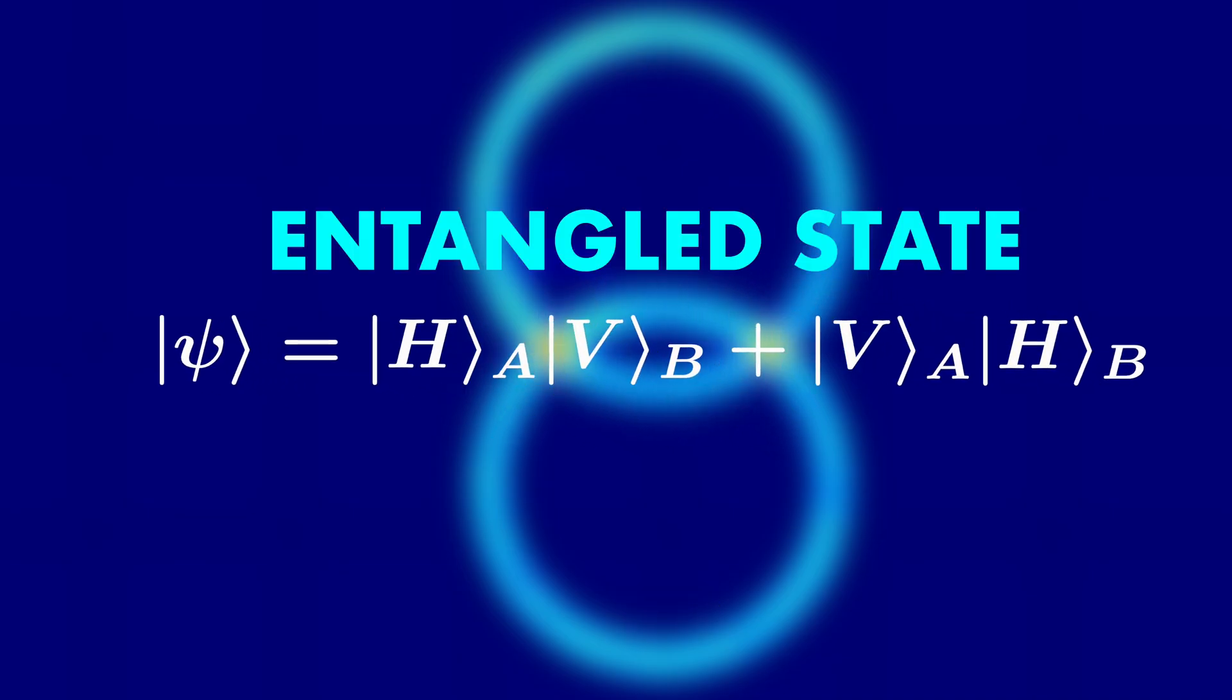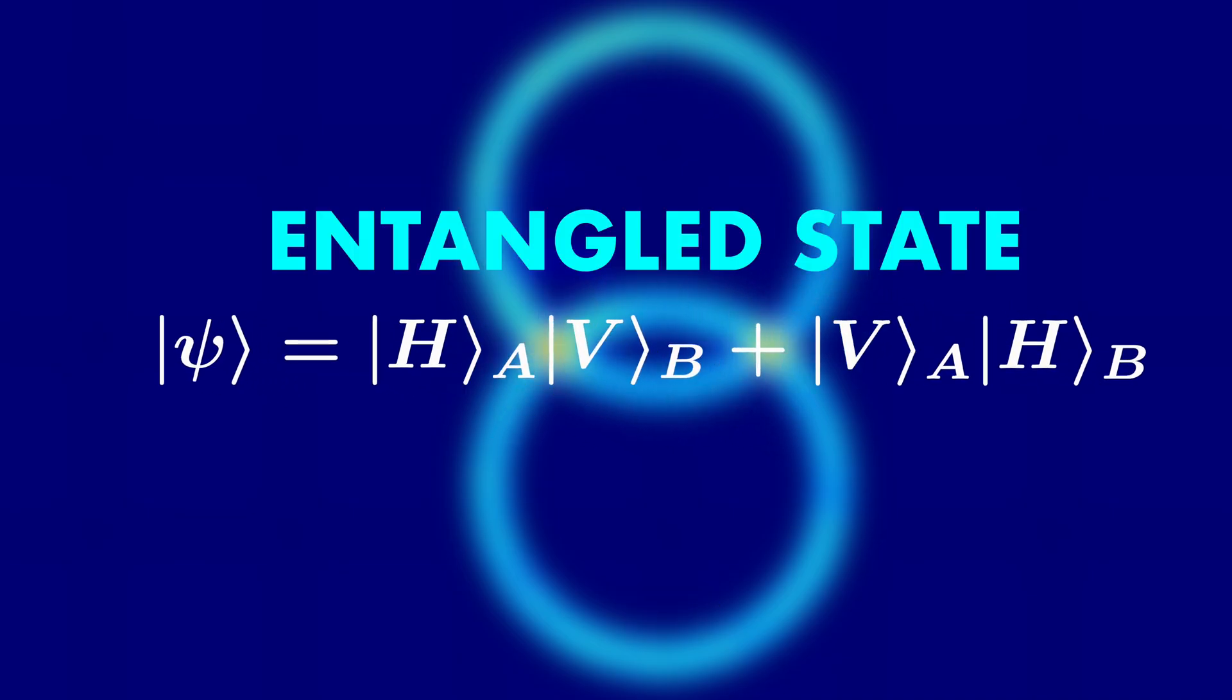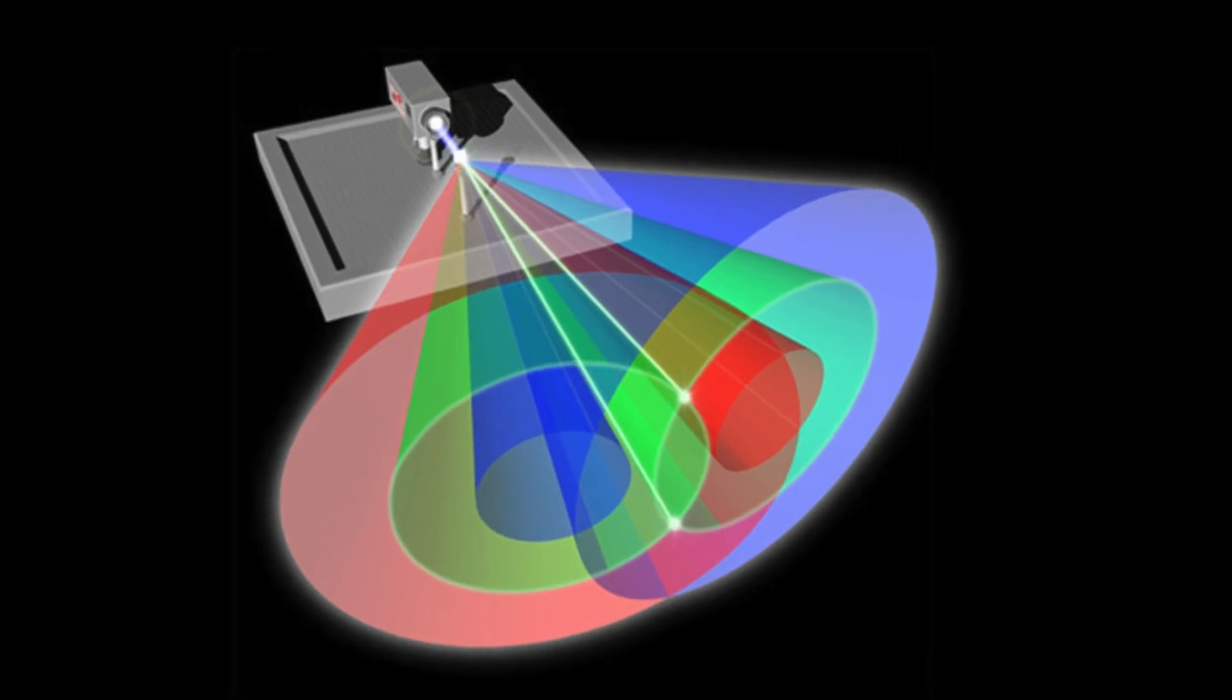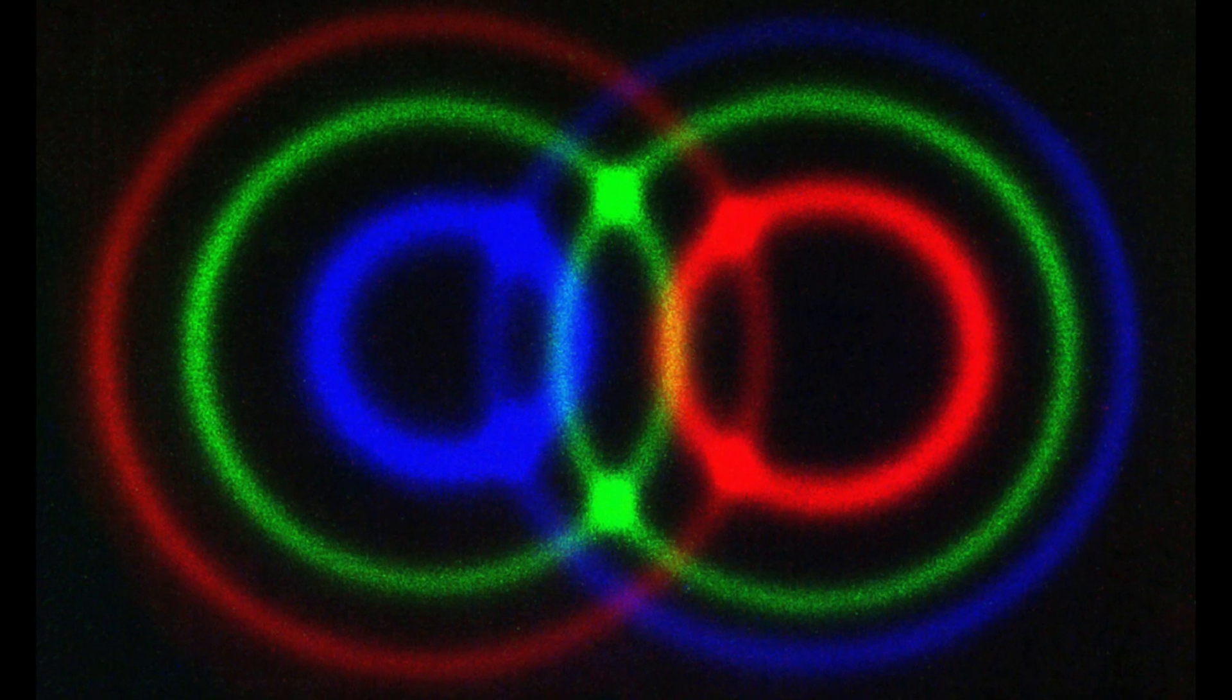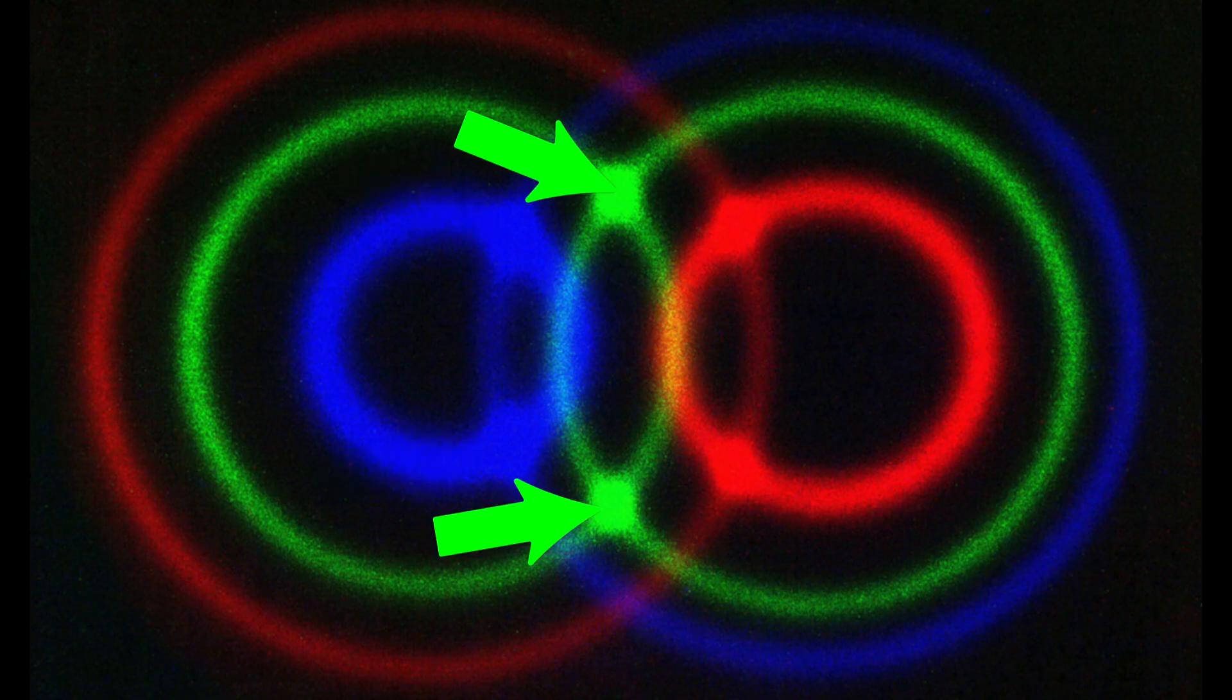This is, again, an entangled state. You can also have situations where you have several cones intersecting, and in this case, you get several entangled photon states. These two are entangled, these two are entangled, and these two are entangled.